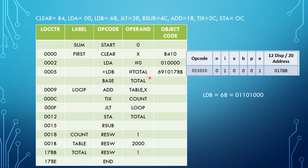Next we have +LDB #total. It is a Type 4 instruction format. In Type 4, we have a 20-bit address, so the total address is 178B. I is set to 1 because it is immediate addressing mode. The LDA mnemonic value is 68, and the 6 most significant bits are taken for the opcode. The object code is 6910178B.